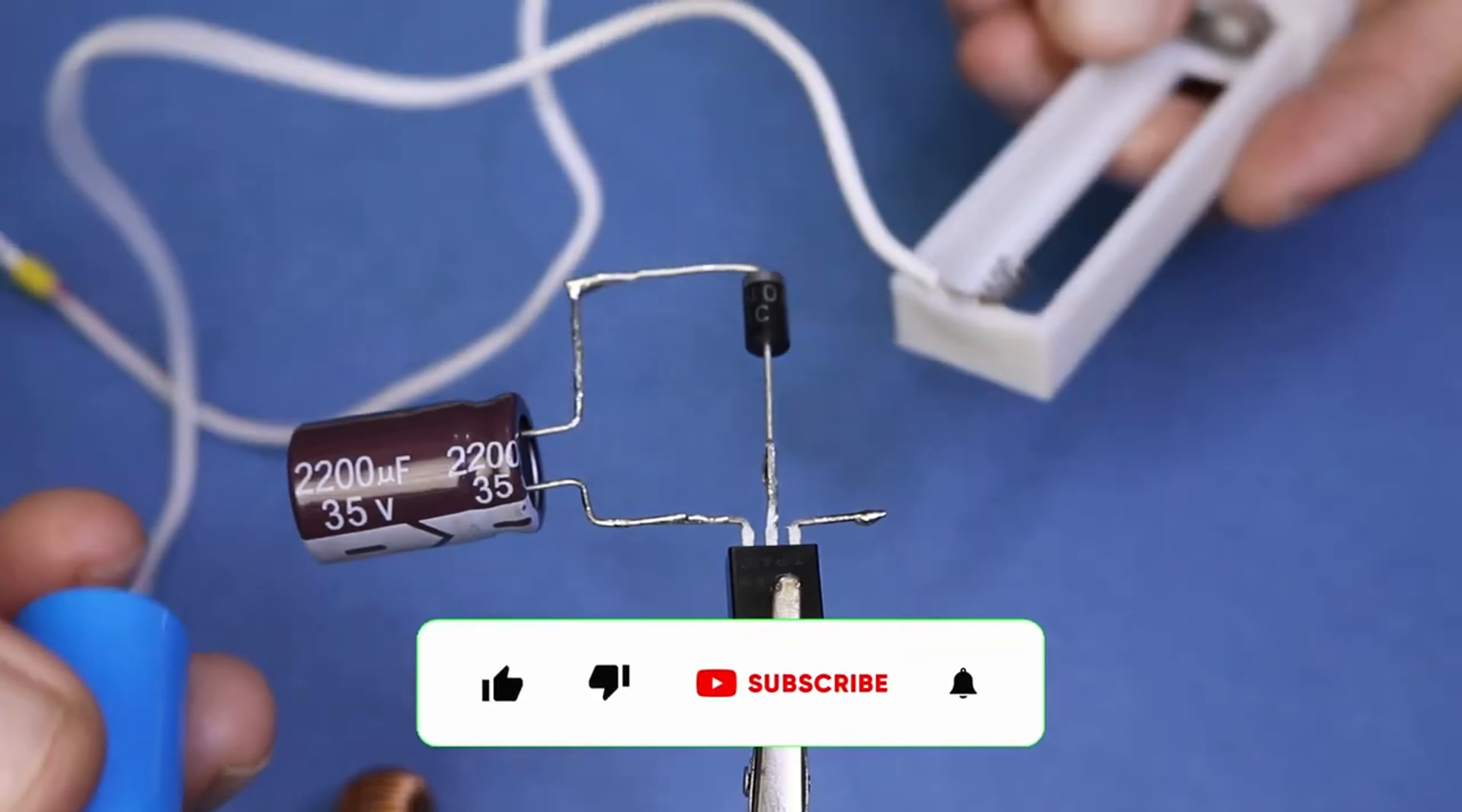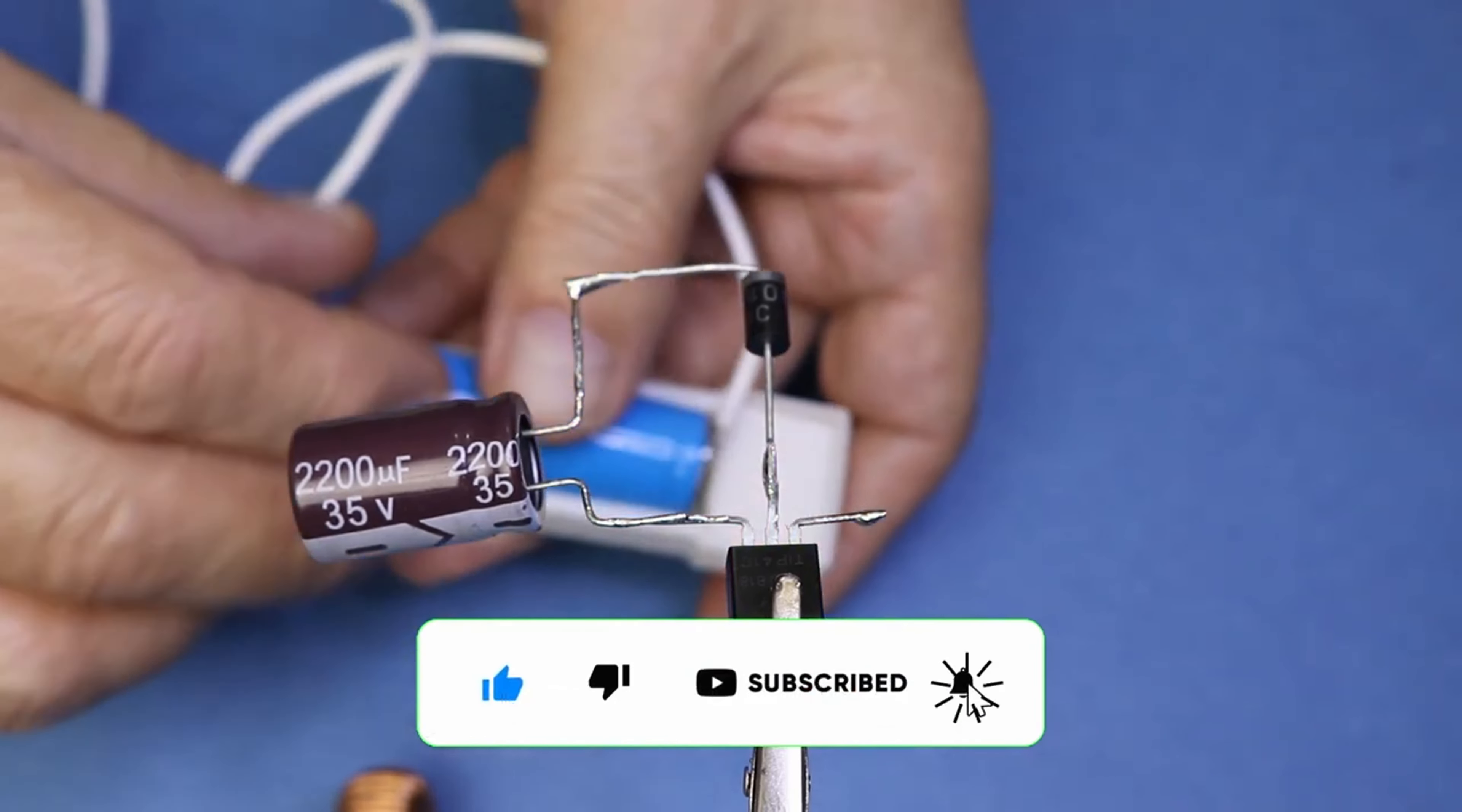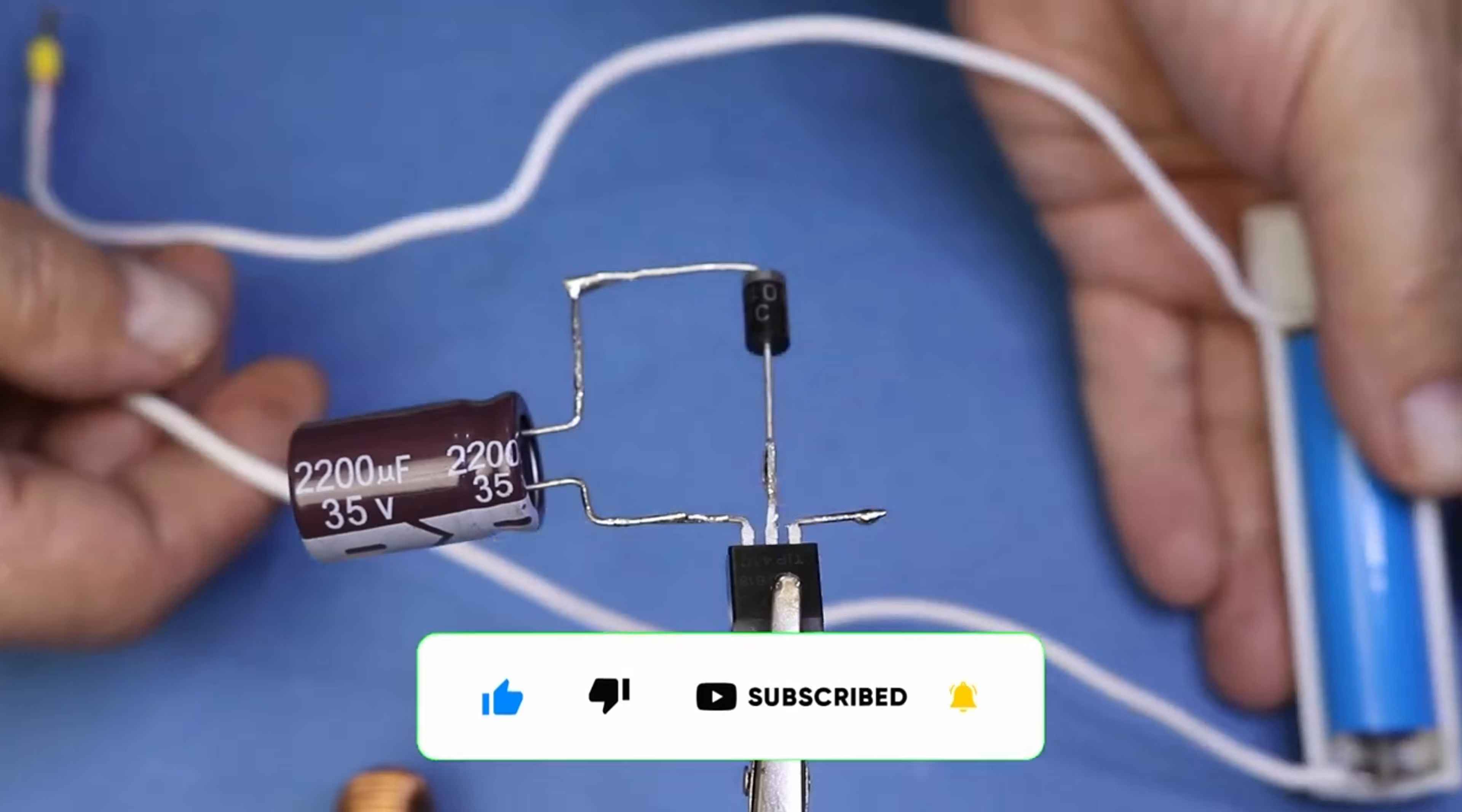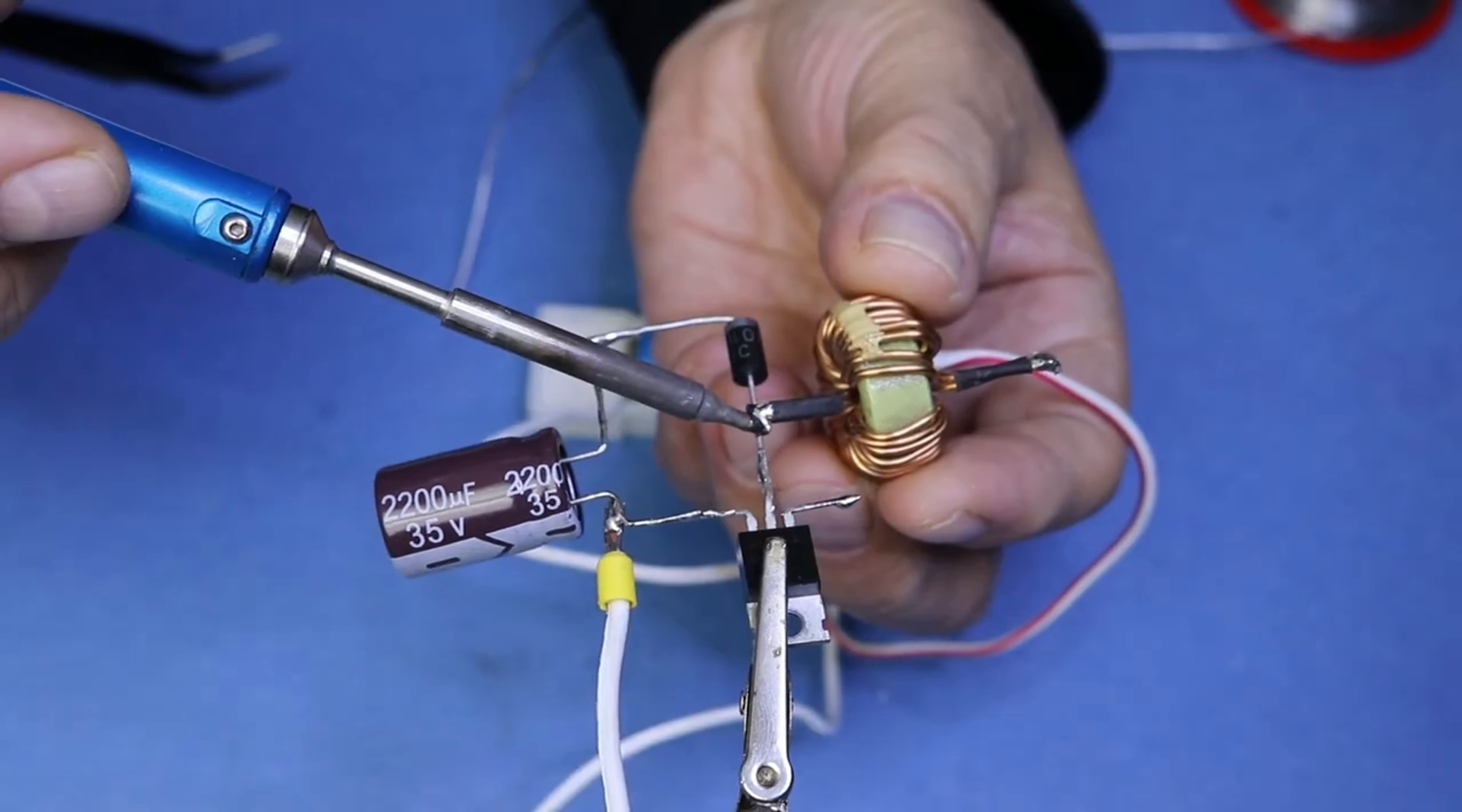Components: 1X TIP42 transistor, 1X 2200 UF capacitor 35V or 50V either will work, 1X 1N5408 diode, 1X 1K resistor 2W or 3W.